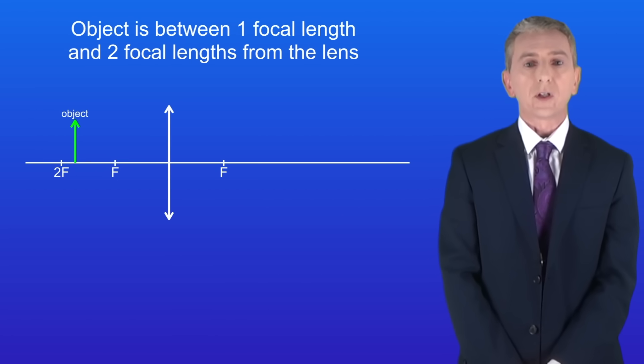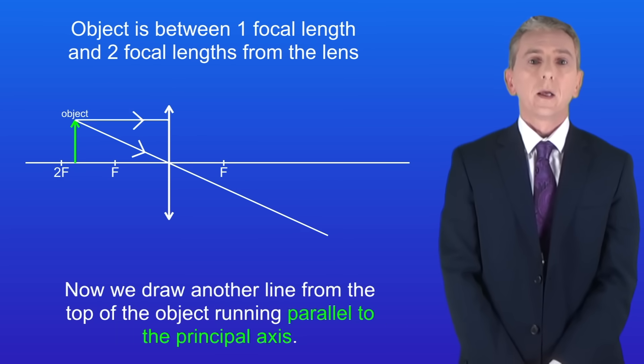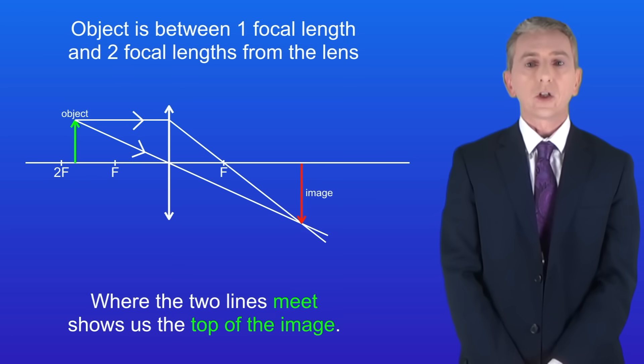Okay now we're going to move the object so it's between one focal length and two focal lengths from the lens. We construct the ray diagram in exactly the same way as before. So first we draw a line from the top of the object passing straight through the center of the lens without changing direction. Now we draw another line from the top of the object running parallel to the principal axis. Remember that when this line hits the lens it's refracted through the principal focus.